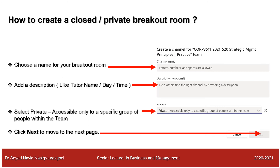The second type is the private breakout room. Again you add the channel name — for example, CORP3511 Workshop Number Two. For the description I put my name, since I am running Workshop Two on Tuesday at 3pm. In the Privacy section, select Private — accessible only to a specific group of people within the team — then click Next.